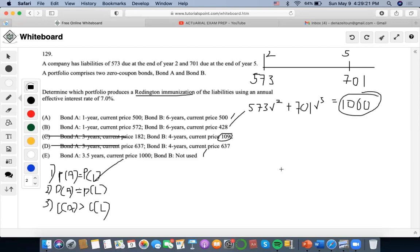Now the duration. Let's solve for the duration of the liability. We're going to do 573 times the time value of 2 times V squared plus 701 times the time value of 5 times V to the 5, over the present value which we already solved as one thousand.